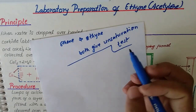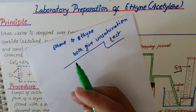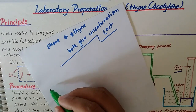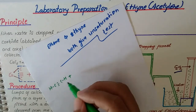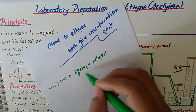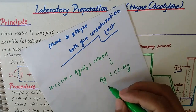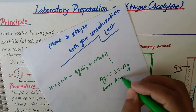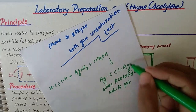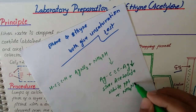To distinguish ethyne from ethene, we use ammonical silver nitrate solution. When ammonical silver nitrate (AgNO₃ + NH₃) reacts with ethyne gas, which has a C≡C-H bond, it gives a white precipitate of silver acetylide (Ag-C≡C-Ag), plus ammonium nitrate and water.